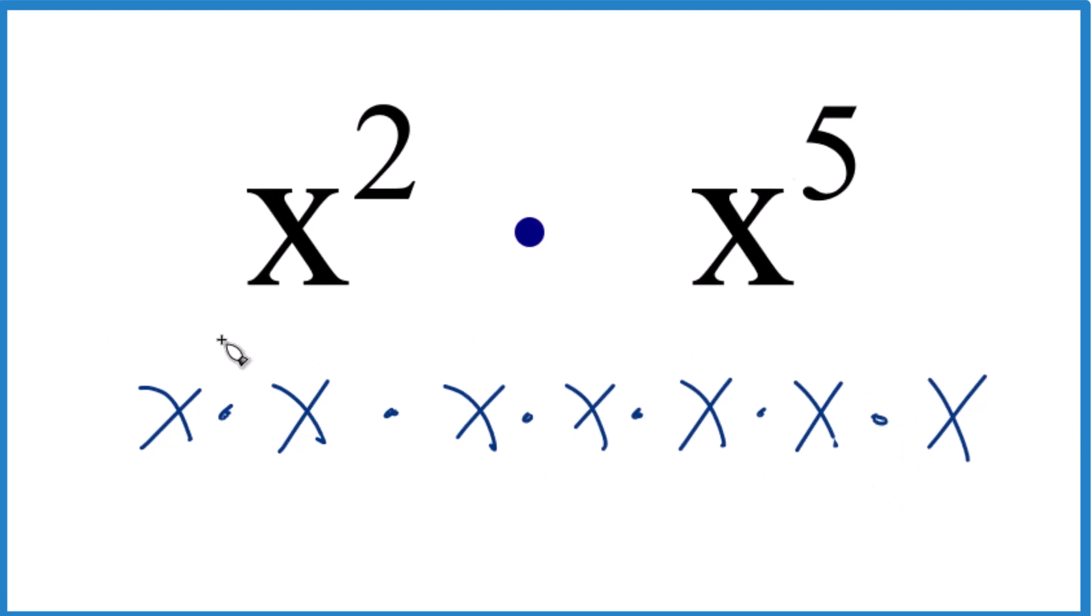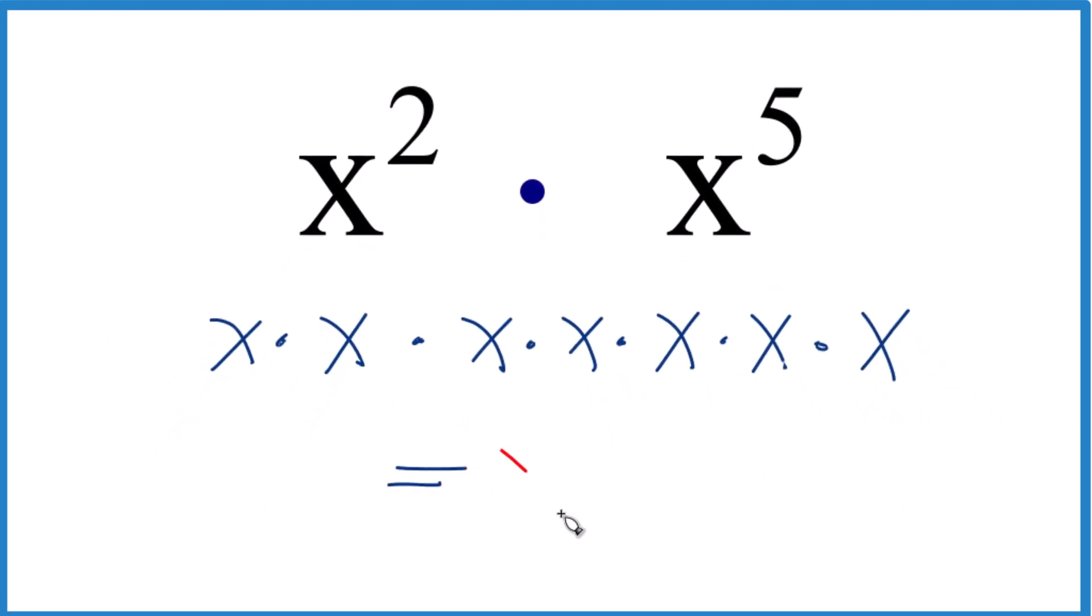That's five x's. If you add all of these up, the two plus the five, you get x to the seventh. So in answer to our question, x squared times x to the fifth, we get x to the seventh.